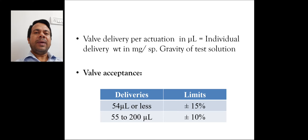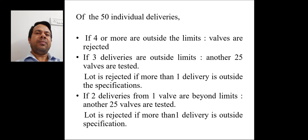Now the valve acceptance criteria. If the delivery of valve is 54 microliters or less then the acceptance limit is plus minus 15%. If the delivery is 55 to 200 microliters then the acceptance limit is plus minus 10%. Of that 50 individual deliveries, if 4 or more are outside the limits then valves are rejected.